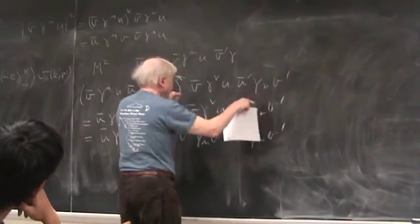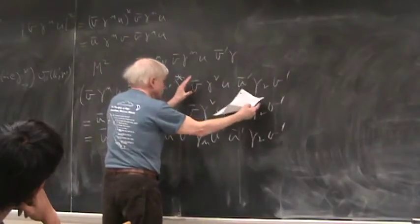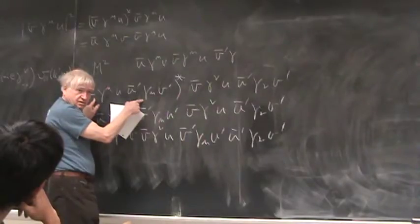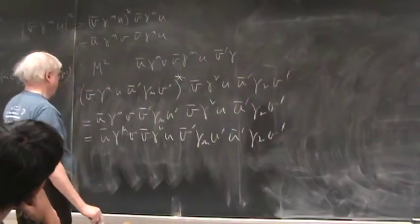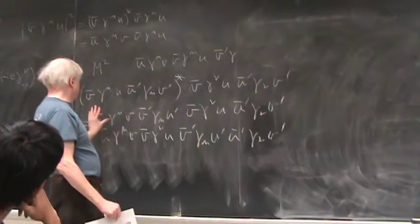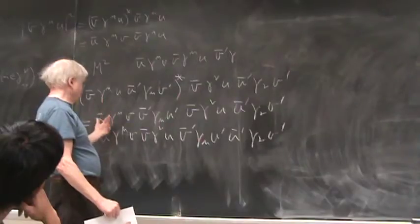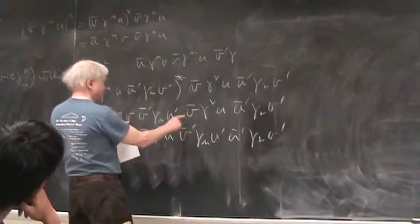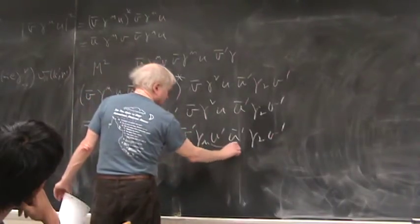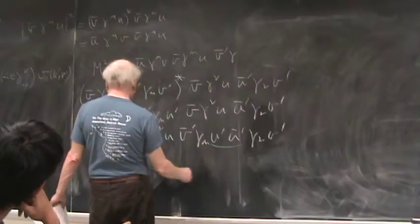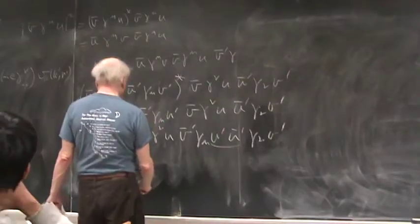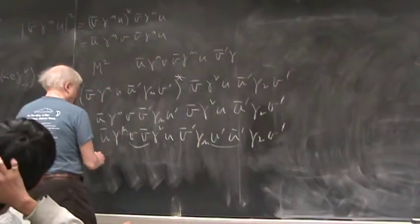So is it the case that each of these sets of three things - spinor, gamma, spinor - commutes with another? Oh yeah, it's just numbers now, it's just complex numbers. This is a four-component vector, not a four-vector. And in other words this thing v̄ γ^μ u, ū γ^μ v, that's this thing but with μ replaced by ν.